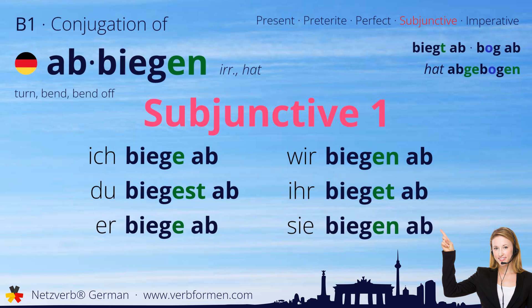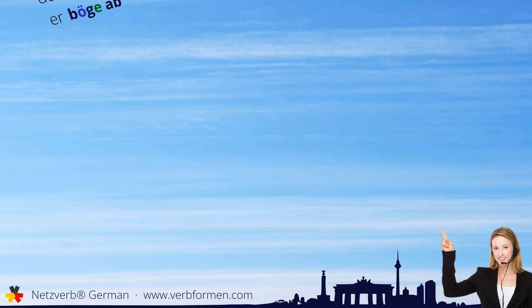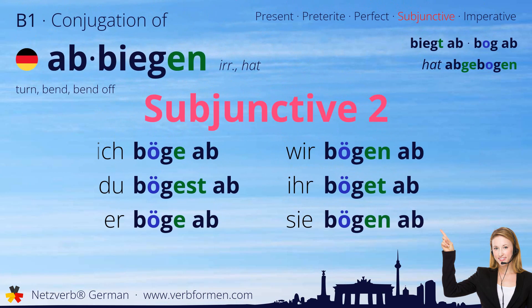Now we move on to the subjunctive two. Ich büge ab. Du bügest ab. Er büge ab. Wir biegen ab. Ihr büget ab. Sie biegen ab.